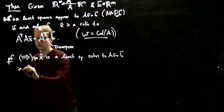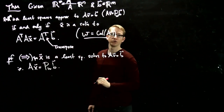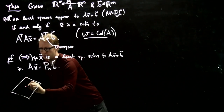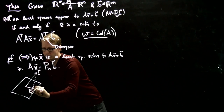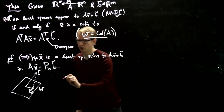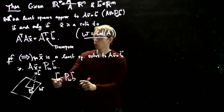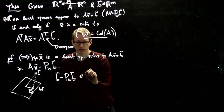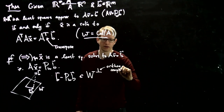Suppose X is a least squares solution to AX = B, i.e., X solves AX equals the projection of B onto W. Here's a little picture to help us visualize everything. Let's say this is the vector B, this is the subspace W, and this is the projection of B onto W. If we take the difference B minus the projection of B onto W, that difference is exactly the line orthogonal to W.